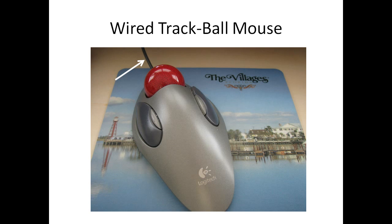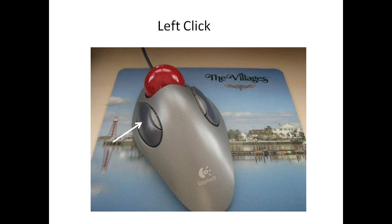Another type of mouse is a wired trackball mouse. It's wired, connected to your computer. It has a left click and a right click, and the ball that you see there — the red one — we'll be walking through that in the left and right click later.